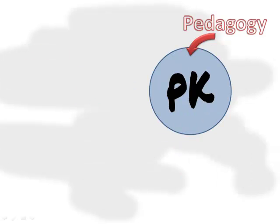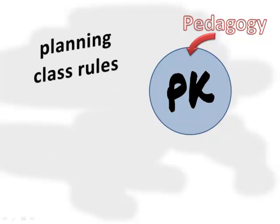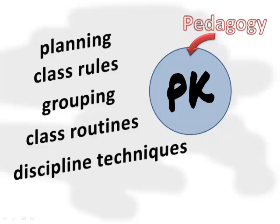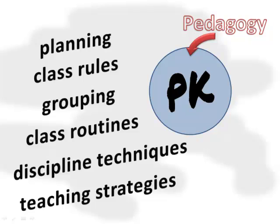Shulman further explained that teachers also needed knowledge about how to teach, which is Pedagogical Knowledge, or PK, also illustrated with a circle. This knowledge included planning lessons and implementation strategies, such as establishing class rules, grouping students to promote learning from each other, setting up class routines, using discipline techniques, and teaching strategies to enhance the learning environment.